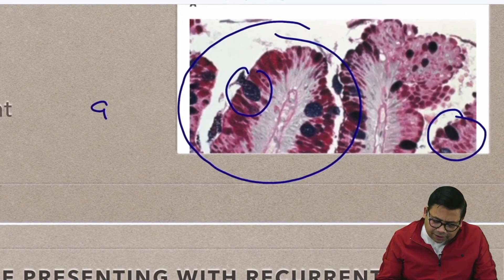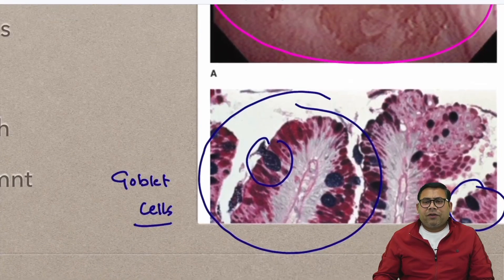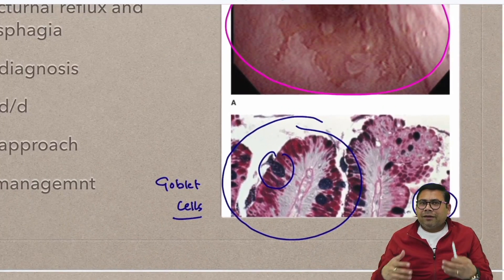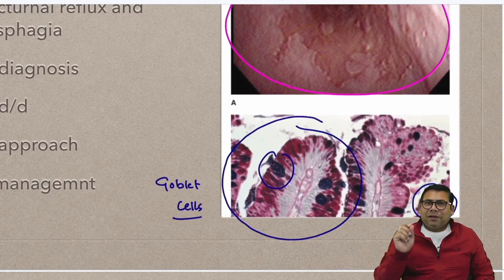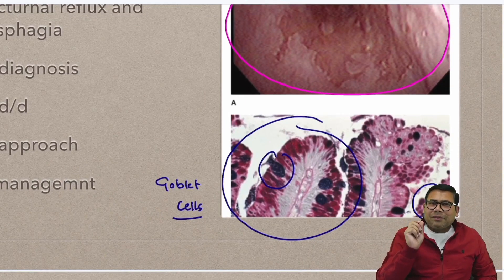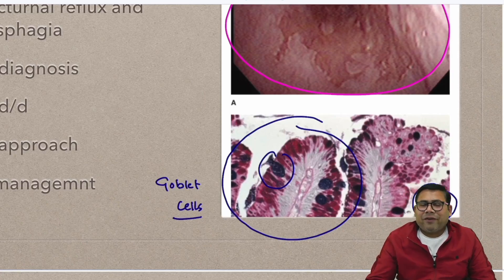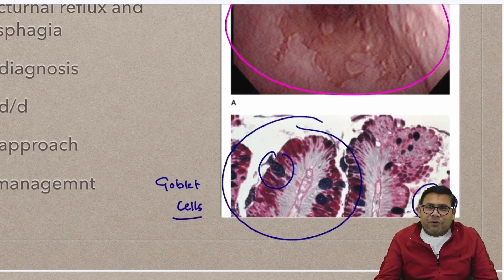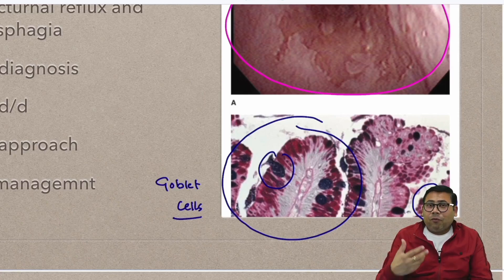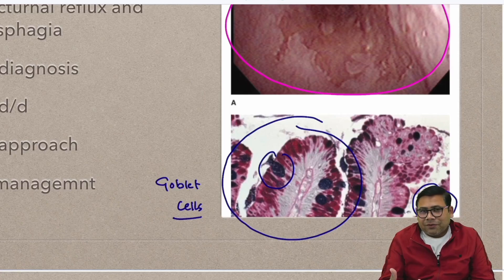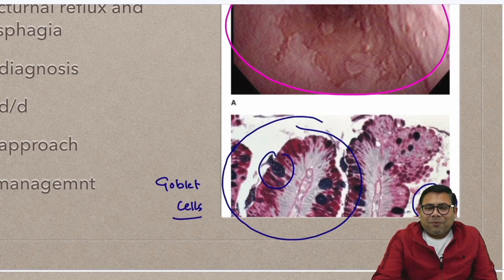The appearance on upper GI endoscopy is classical, and on biopsy you see goblet cells — that is the key finding. As a routine practice, I'll keep bringing you small, crisp videos. Please subscribe to my channel, share it with your friends, and comment below with topics you want me to cover or whether you liked this topic. Thank you, keep watching.